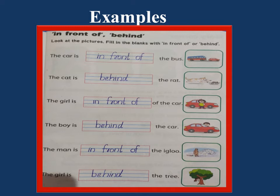The man is in front of the igloo. And the last one: you can see a girl — she may be hiding behind a tree. We cannot see the girl completely, even part of the girl only can be seen. That is why we should use 'behind'. The girl is behind the tree. She may be hiding, may be playing, but we cannot see the girl clearly. She is at the back, that means behind. So once again: the car is in front of the bus, the cat is behind the rat, the girl is in front of the car, the boy is behind the car, the man is in front of the igloo, the girl is behind the tree.